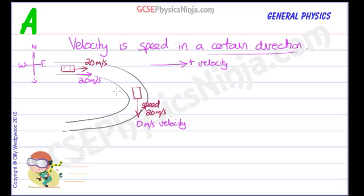So what happens if the car continues around the corner, and now is going back on itself? So the speed is still 20 meters per second. But now we're going in the opposite direction as we started. Now the opposite direction to positive must be negative. So the velocity here will be minus 20 meters per second.